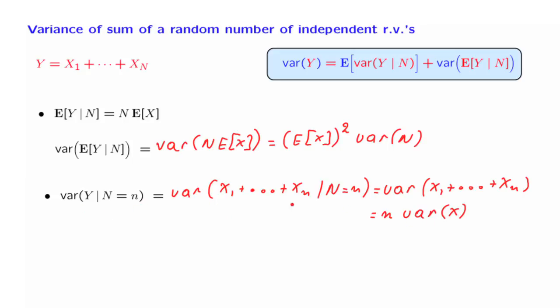Now let us take this equality, which is an equality between numbers and is true for any particular choice of little n, and turn it into an equality between random variables. This is the random variable that takes this specific value when capital N is equal to little n.